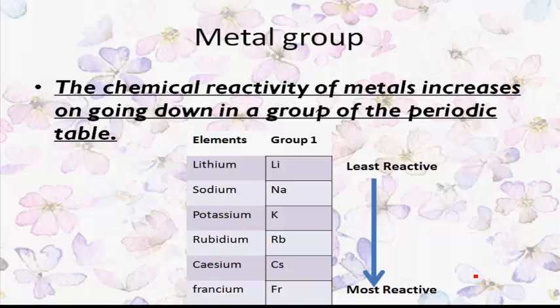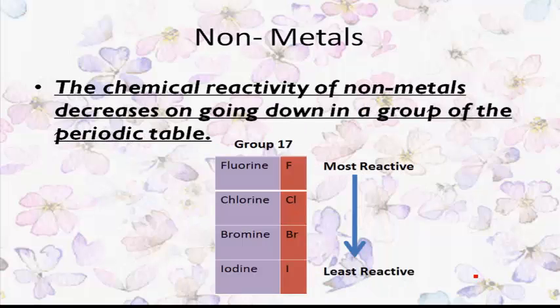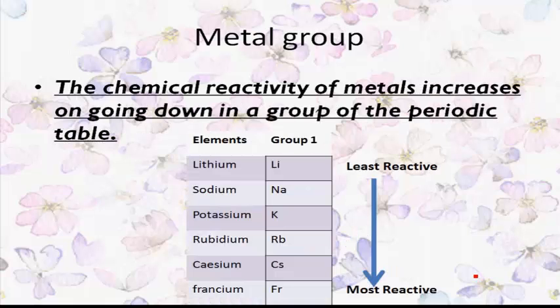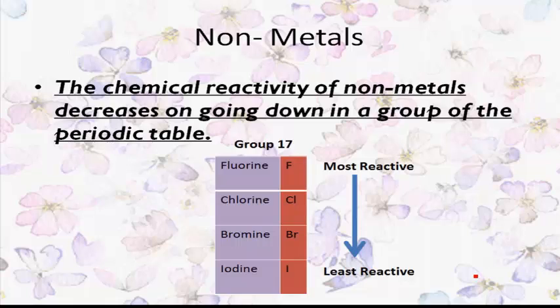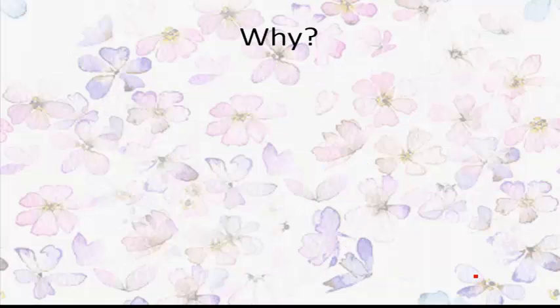In non-metals, the chemical reactivity decreases on going down in a group of the modern periodic table. So we have a contradiction: in metals, reactivity increases going down the group, while in non-metals, reactivity decreases going down the group. Let's understand why this happens.